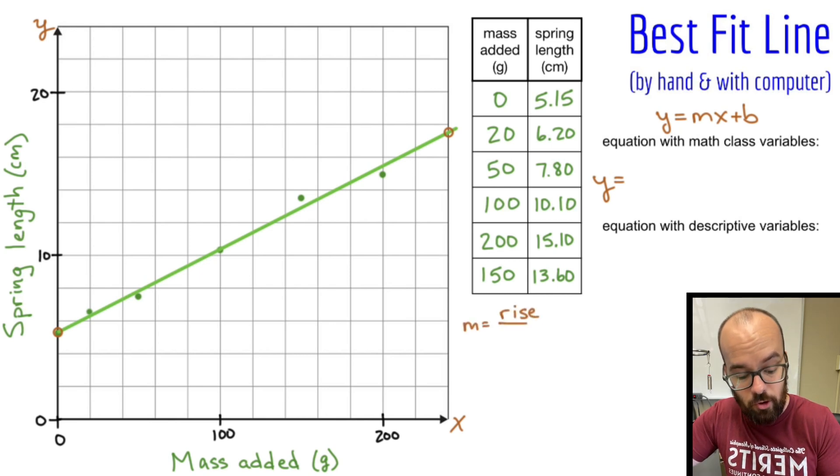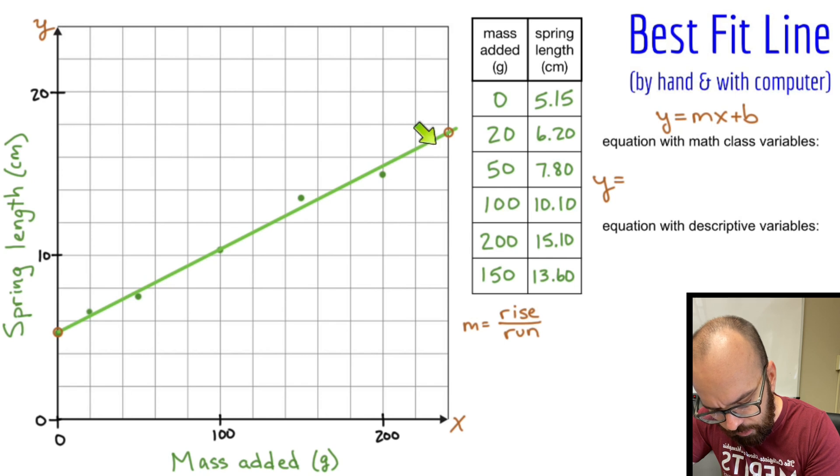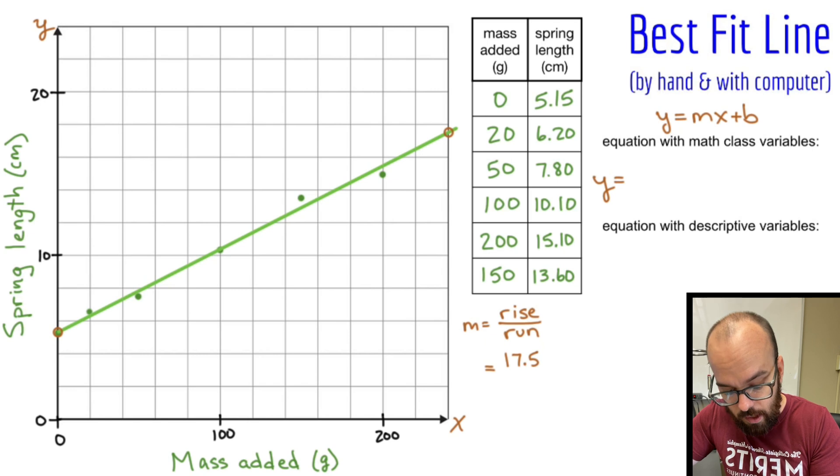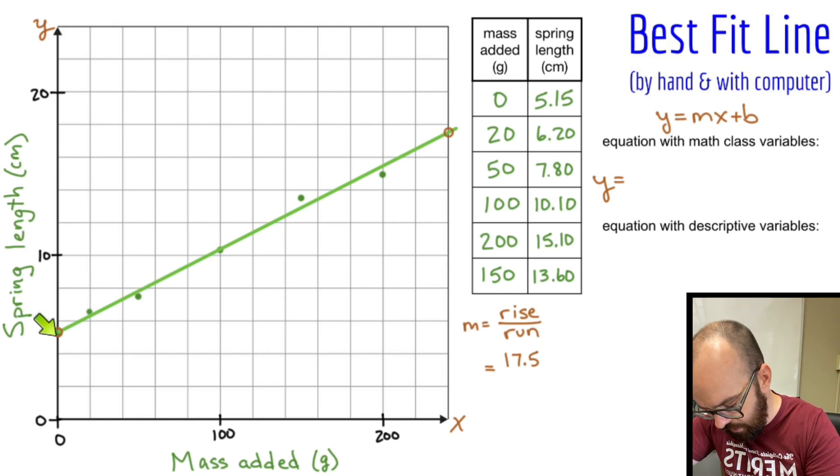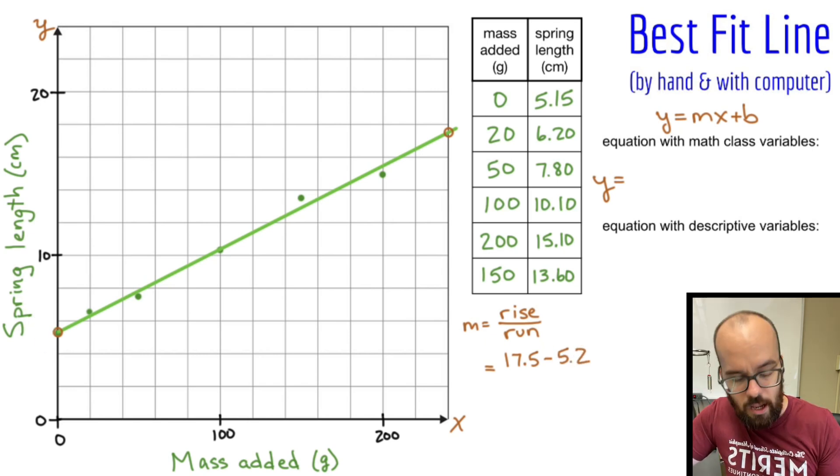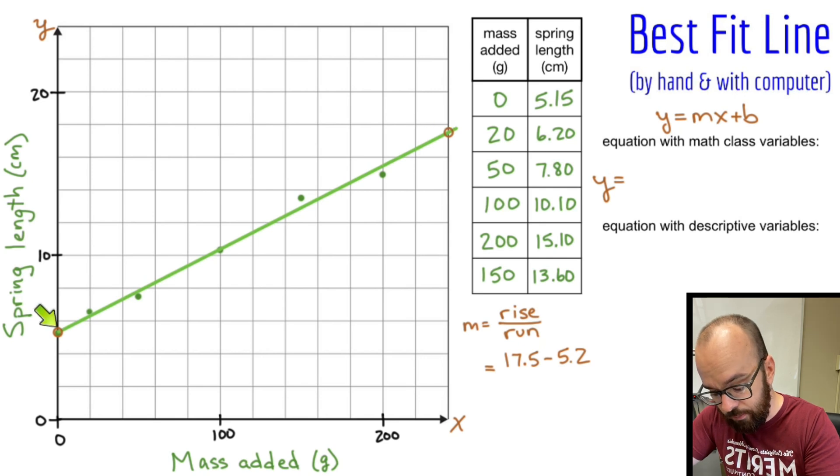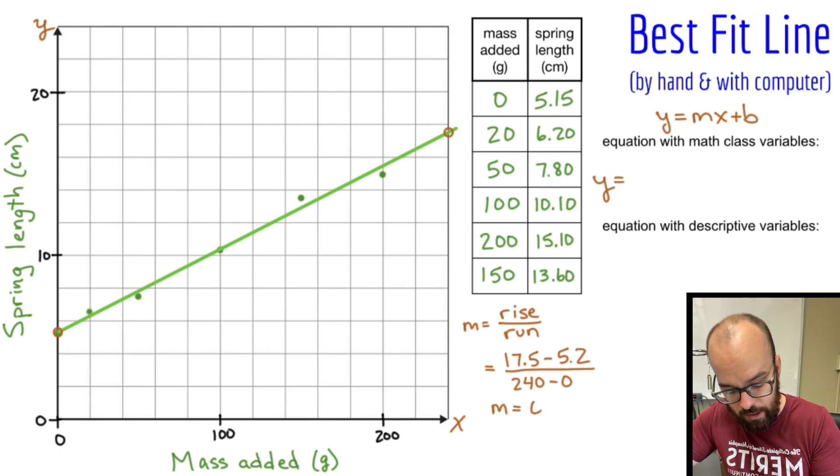So let's calculate our slope. Our slope is rise over run. Rise is going to be your change in y values. So y2 minus y1 over run. Run's going to be your change in x values, x2 minus x1. I'm going to start with the y value of this point right here. It looks like it's going to be about 17.5 or so. And then I'm going to find my y value of this point over here, about 5.2 maybe. And that'll be my rise or my change in y. I'll do the same thing with the run. This point the x value is 240. And this point the x value is 0. So 240 minus 0. And then I'll just punch that into the calculator and I get a slope of 0.0513.